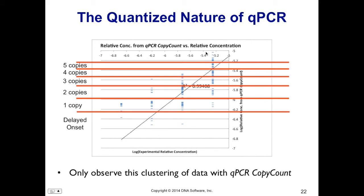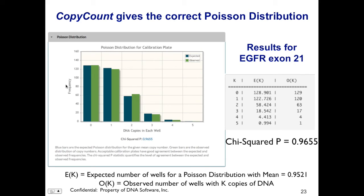We also observed a few data points at exactly half a molecule — which initially confused us, since half a molecule doesn't exist. We realized this was one molecule of DNA delayed by one cycle: a new effect called delayed onset of PCR. We've figured out how to quantify the amount of delayed onset, which depends on primer design and template GC content. To verify our counts, we compared observed versus predicted Poisson distributions for one of our assays, and the agreement was very good — chi-squared P of 0.96.